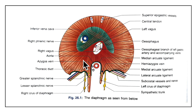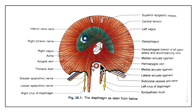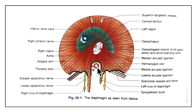Now let's learn about the openings in the diaphragm. There are mainly large openings and small openings. There are three large openings: the aortic opening, the esophageal opening, and the vena caval opening. The aortic opening lies at the lower border of the 12th thoracic vertebra and it transmits the aorta, the thoracic duct, and the azygos vein.